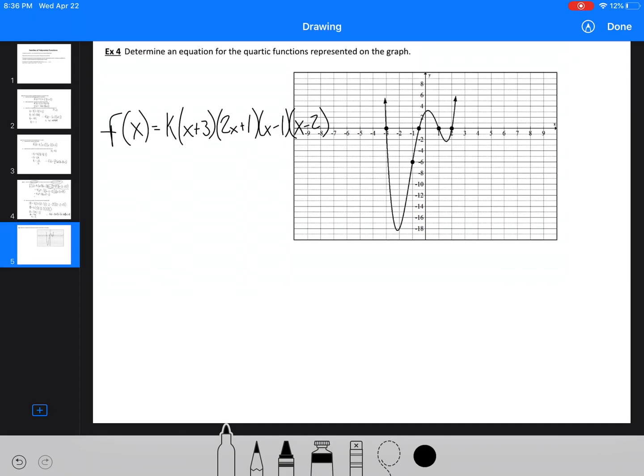So now we've got all of our points there. So now all we're going to have to do is sub in this point. We've got negative 1 and negative 6. So we'd have negative 6 equals k. This is going to be (negative 1 plus 3) times 2 times (negative 1 plus 1) times (negative 1 minus 1), and (negative 1 minus 2).